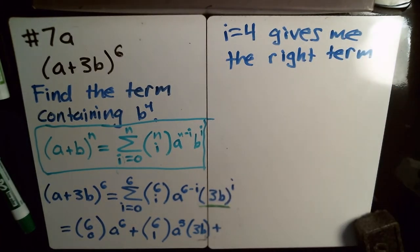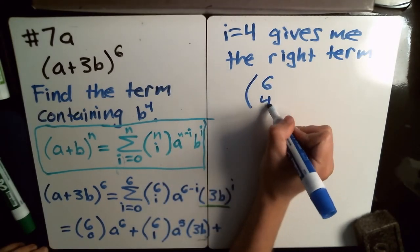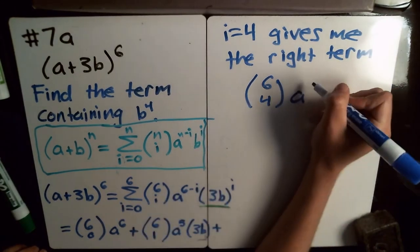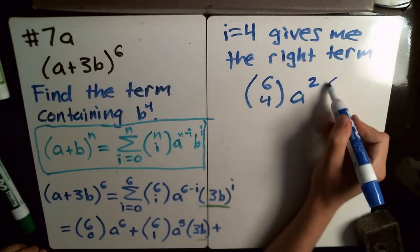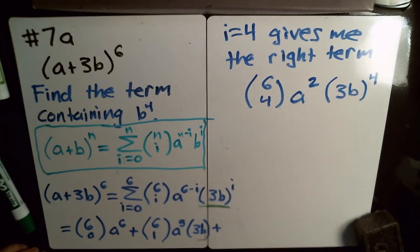Okay, so what I'm going to do is I'm just going to look at that term. Replace i with 4. So 6 minus 4 is 2, and then 3b to the 4th power. So that will be the term. If I wrote all these out, this would be the term that has 3b to the 4th in it.